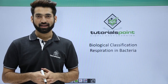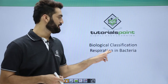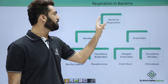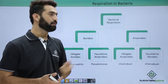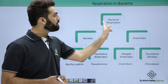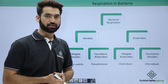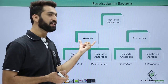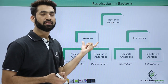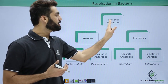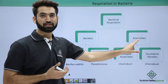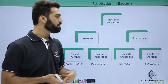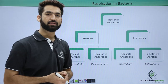In this session we'll be talking about the life process in bacteria called respiration. The bacteria can respire in the presence of oxygen or in the absence of oxygen. When respiring in the presence of oxygen, bacterial respiration is called aerobic respiration and the bacteria are called aerobes. When oxygen is not required, it is called anaerobic respiration and those bacteria are called anaerobes.